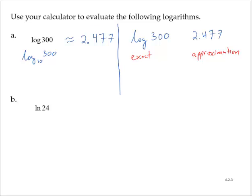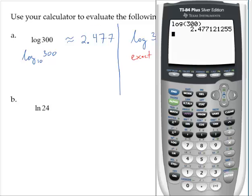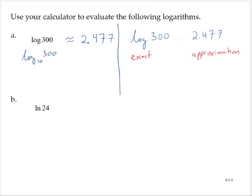Even if I were to write out all of those decimal places that the calculator gives, it would still be an approximation. So the only exact value is log 300 in this case.